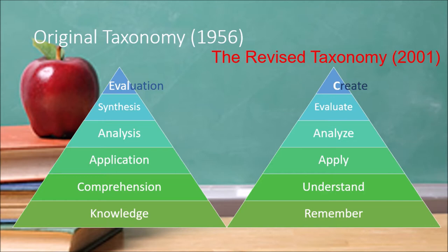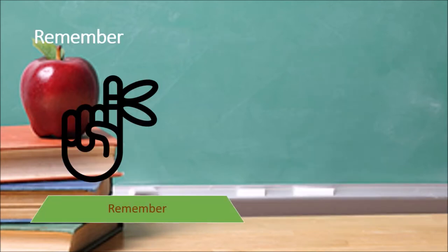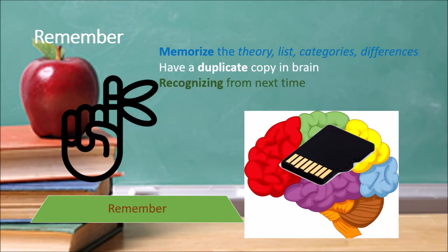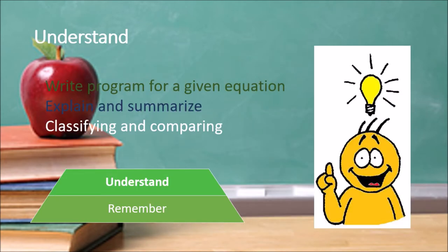This new taxonomy is what we use in engineering learning. The first level is 'remember' — whatever we learn, we memorize the theory, list categories, identify differences, and have a duplicate copy in the brain, or recognize something the next time. At this level, we only remember what we have learned.